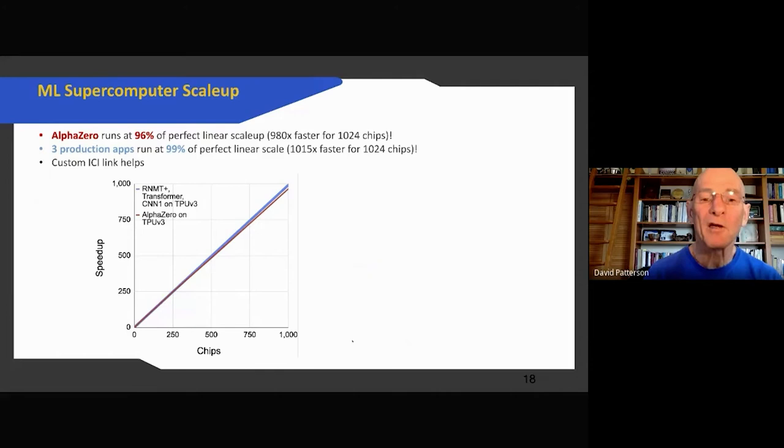Okay, let's talk about scale-up. Remarkably, AlphaZero, this is the program that beat all human beings in the world at both chess and Go and one other game, it is almost perfectly scaled up. So with 1024 TPU v3 chips, it goes 980 times faster, which is 96% of perfect speedup, and three other applications run at 99%. So it's just almost perfect scale-up. It's just what you want from a supercomputer.